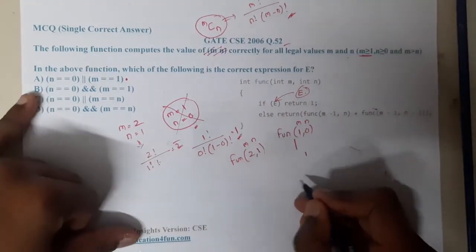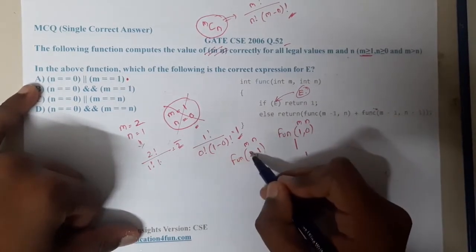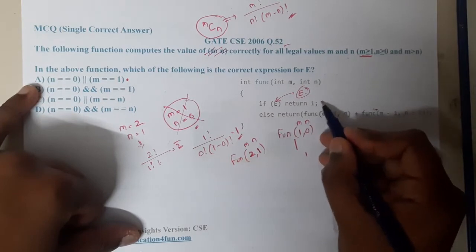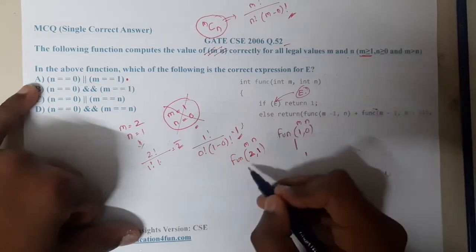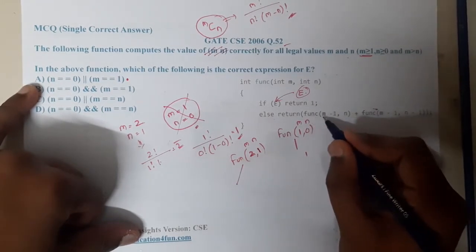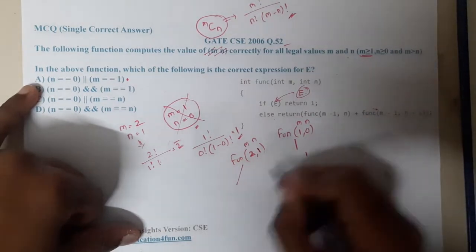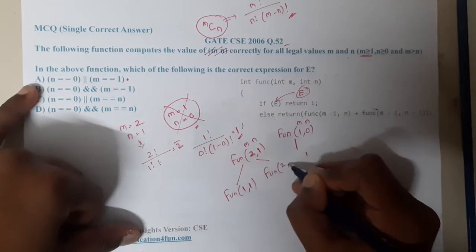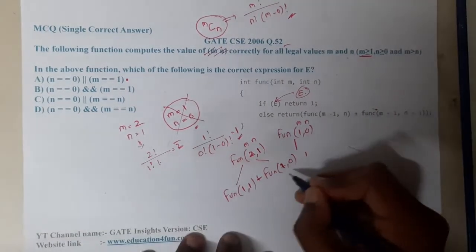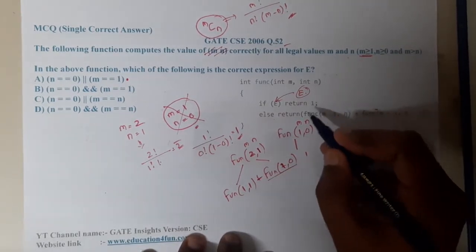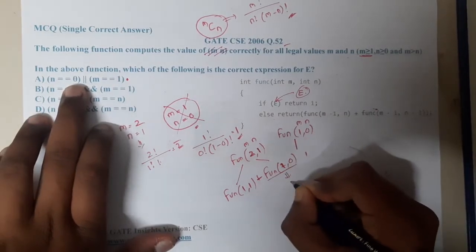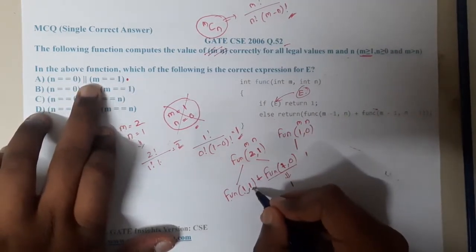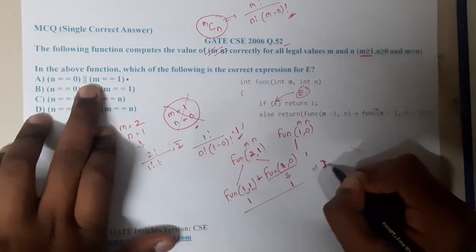Tracing func(2, 1): m = 2, n = 1. It does not enter the if condition because m ≠ 1 and n ≠ 0. So it goes to else, which calls func(m-1, n) + func(m-1, n-1) = func(1, 1) + func(1, 0). func(1, 0) returns 1 since n == 0, and func(1, 1) returns 1 since m == 1. Total: 2. This is correct.